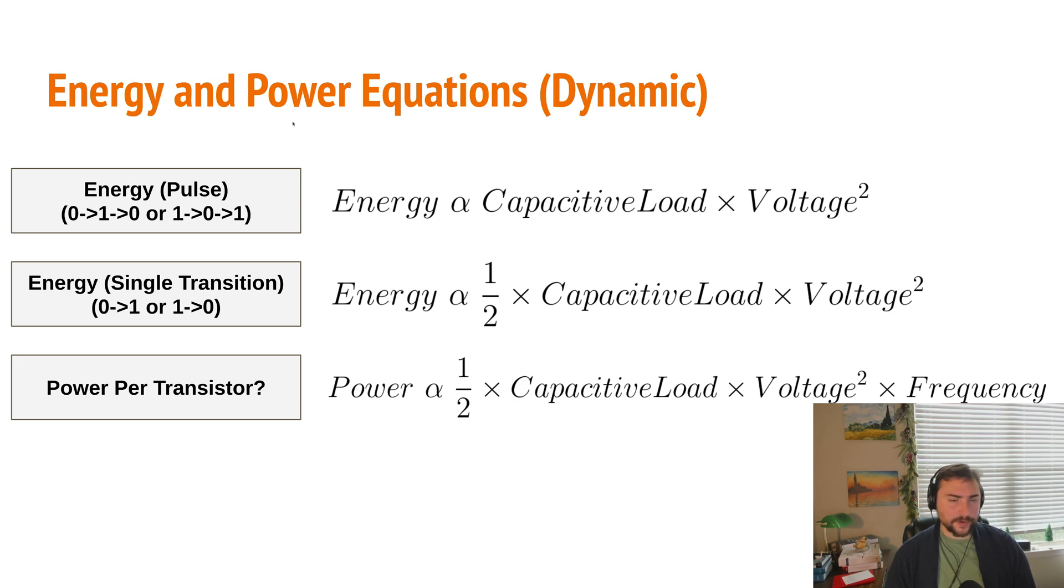Let's talk a little bit more about dynamic energy and look at some equations related to the energy of a pulse, a transition, and our power per transistor. The energy for a pulse of our transistor, going from zero to one to zero or one to zero to one, that amount of energy is going to be proportional to the capacitive load times voltage squared. Our capacitive load is going to be something dictated by our technology process, as well as something called our fan-out - how many other transistors this transistor is connected to.